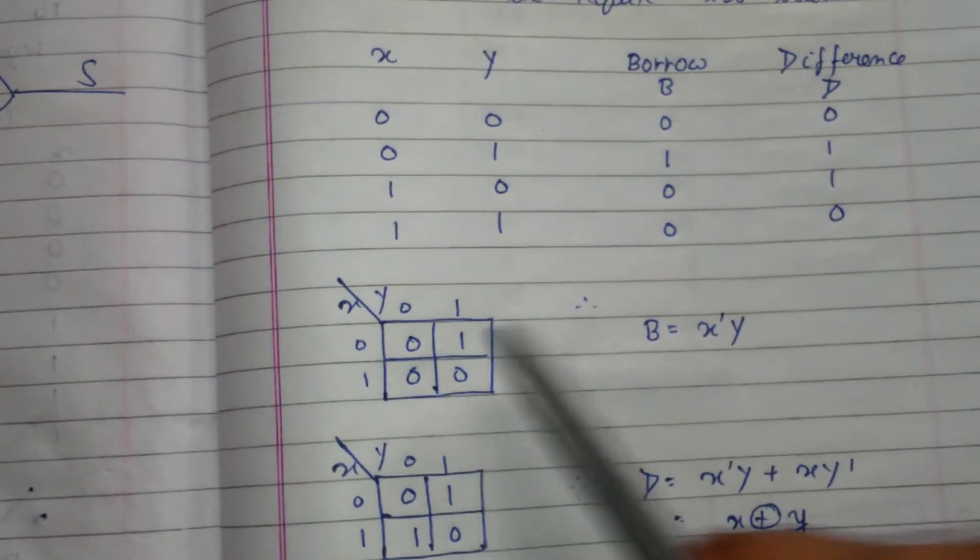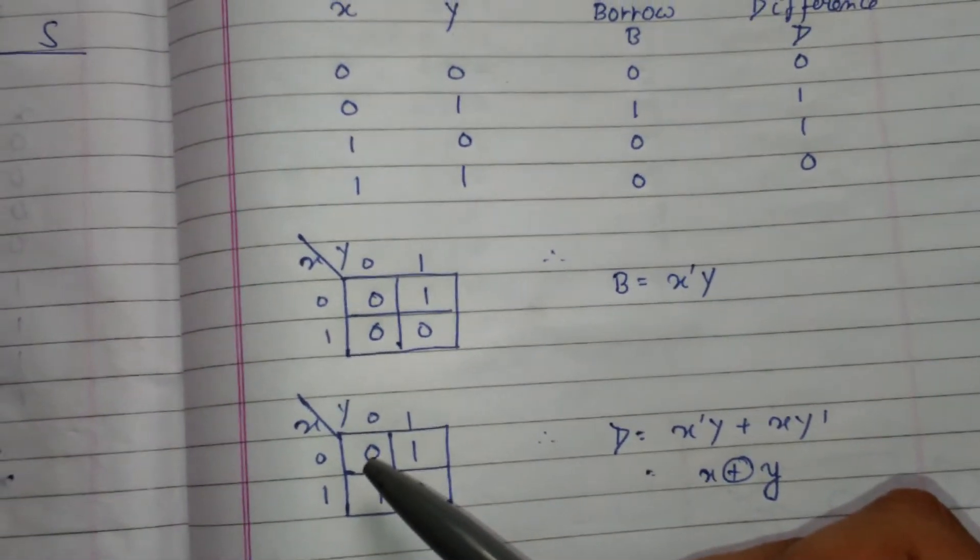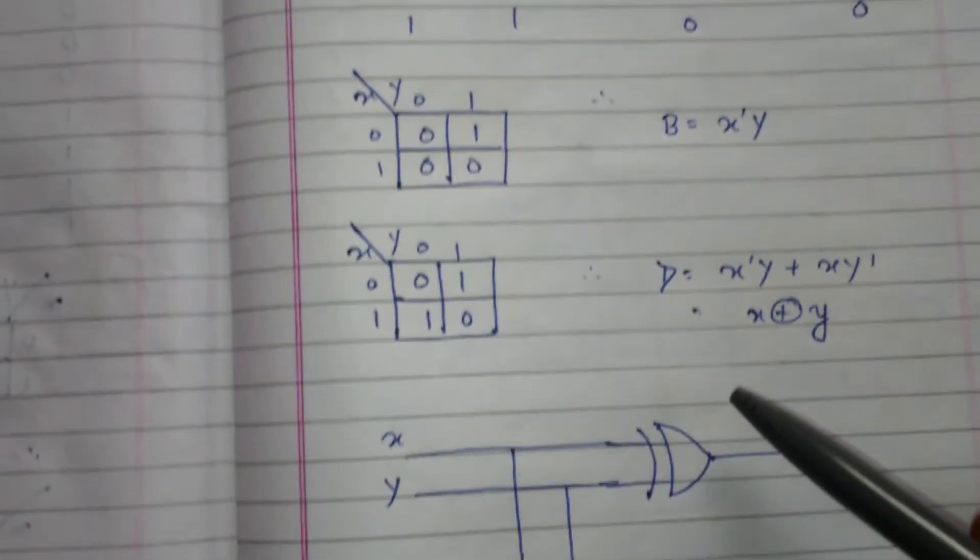And here for difference is zero one one zero, zero one one zero, zero one zero one. So difference is X complement Y plus X Y complement, which is X XOR Y.